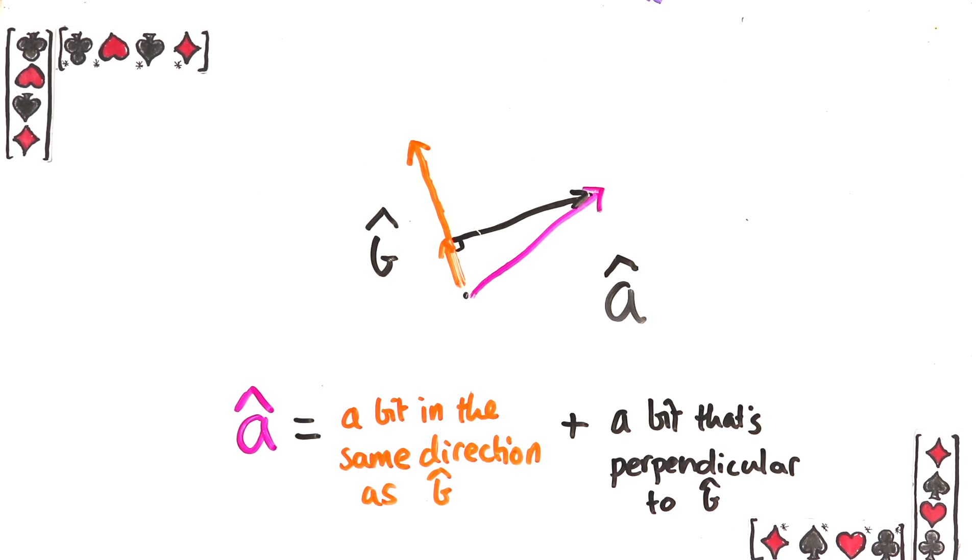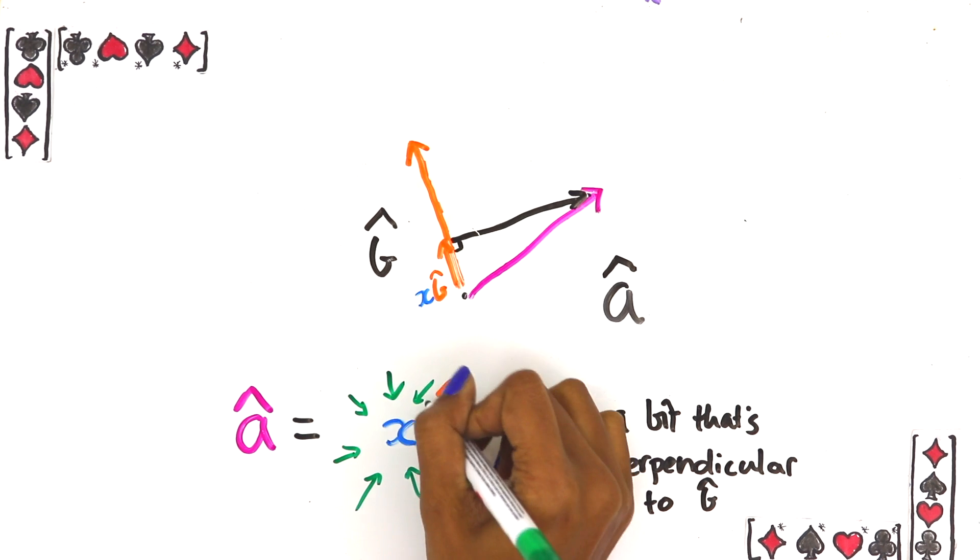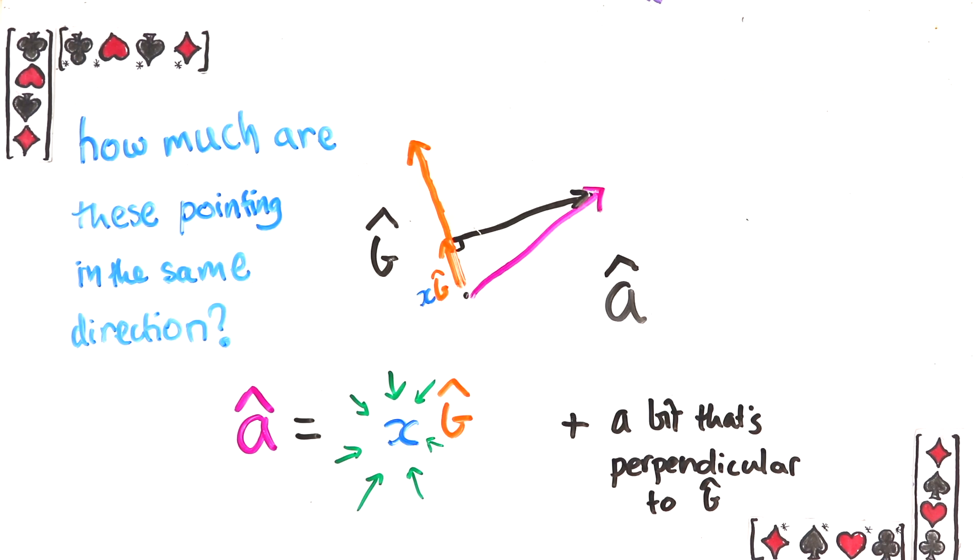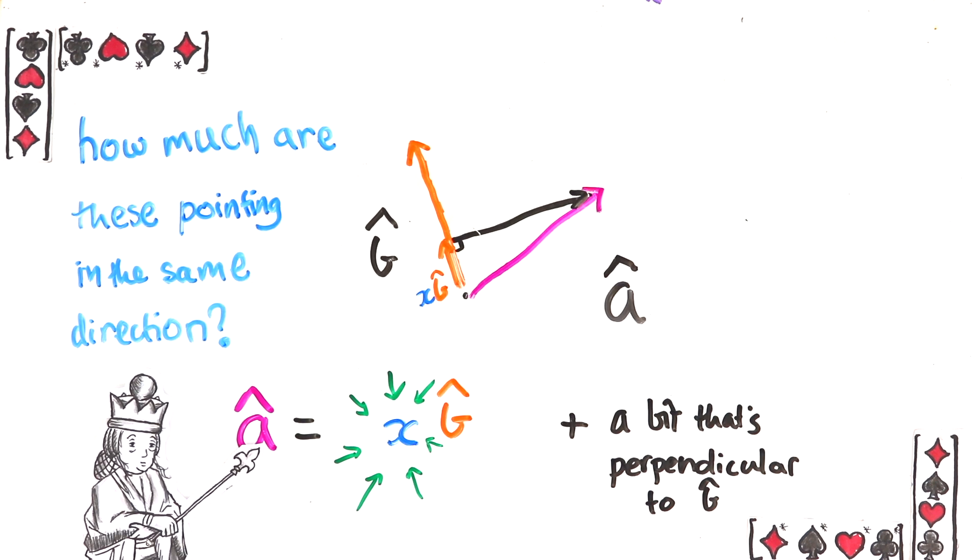But this bit is in the same direction as the vector b hat so you can write it as x times b hat where x is some number. So a hat is equal to x times b hat plus something that's perpendicular to b hat. This number x seems like a good answer to our question because it quantifies how much the a direction has of the b direction in it, which could be interpreted as the amount that they're pointing the same way.